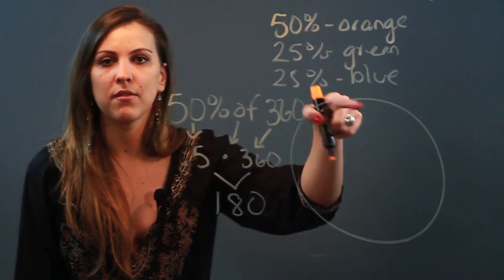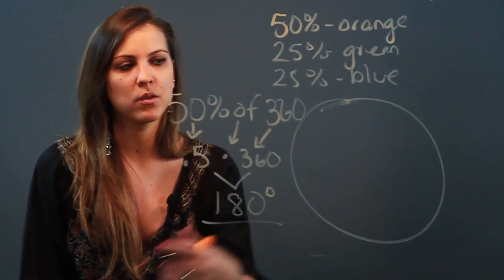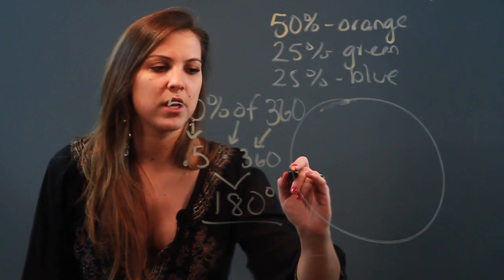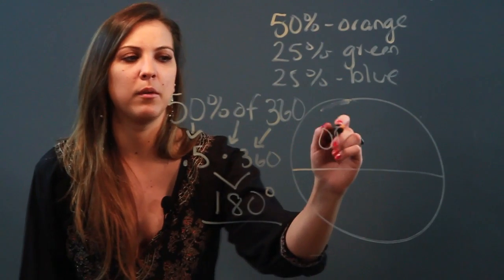Which means that 50% of a circle is equivalent to 180 degrees. So when I go and draw that out, you would have your protractor so you could do it more accurately, but it's going to look like that and this part of it would be orange.